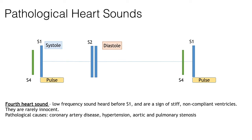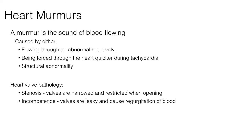Moving on to the main topic: heart murmurs. A murmur can be defined as the sound of blood flowing. In the heart it is caused by flowing through an abnormal heart valve, being forced through the heart quicker during tachycardia — termed a flow murmur — or passing through a structural abnormality such as a ventricular septal defect. The heart valve pathology can either be stenosis, where valves are narrowed and restricted on opening, or incompetency, where valves are leaky and cause regurgitation of blood.